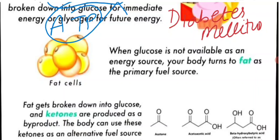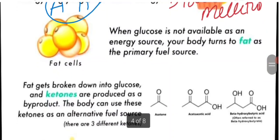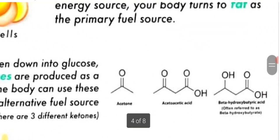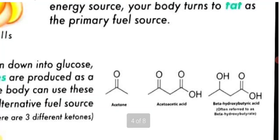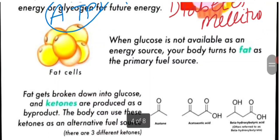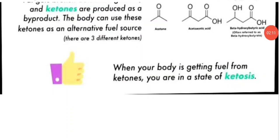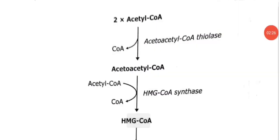Ketone bodies serve as an alternative fuel source. There are three kinds: acetone, acetoacetic acid, and beta-hydroxybutyric acid. When your body is getting fuel from ketones, it is said that you are in a state of ketosis. Ketosis means when your body uses ketones as an energy fuel.